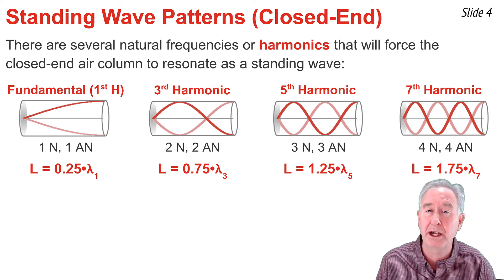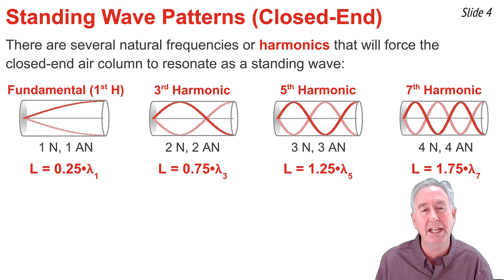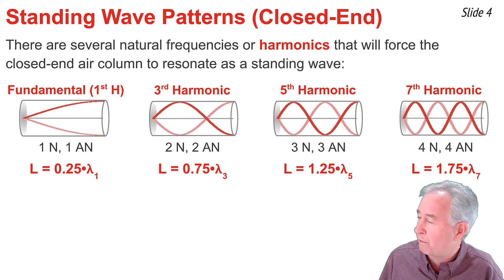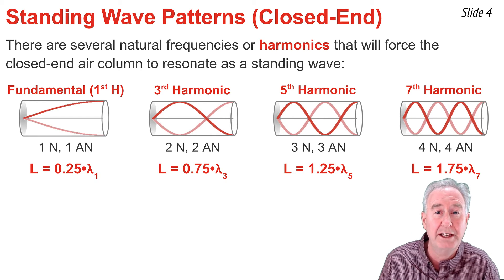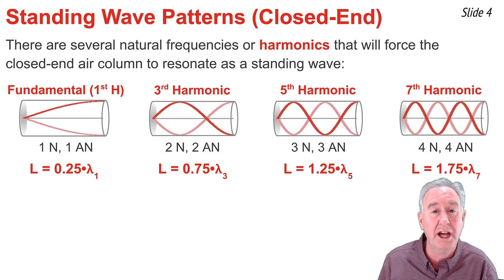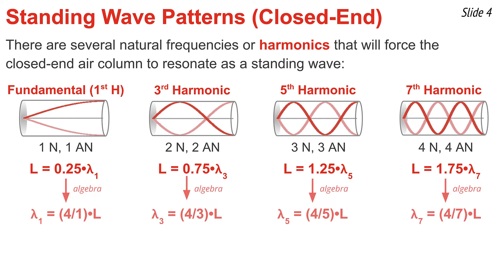I can perform some algebra on each of these statements to transform them from L = equations into λ = equations. For the first harmonic, dividing both sides by 0.25 gives λ = (4/1)L. For the third harmonic, dividing both sides by 0.75 gives λ = (4/3)L, approximately 1.33L. For the fifth harmonic, the result is λ = (4/5)L, or 0.80L. And for the seventh harmonic, λ = (4/7)L.